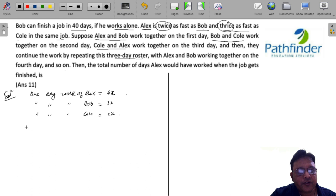Now we see that they work in a cycle, in a pattern. On first day, A and B work together. So if A and B work together, they will complete 6x plus 3x, 9x of the work.